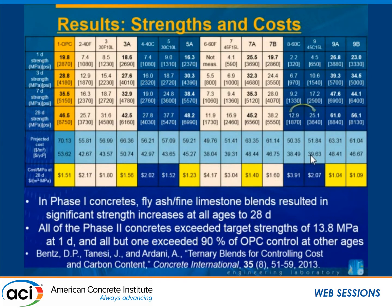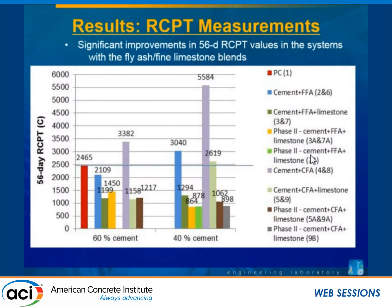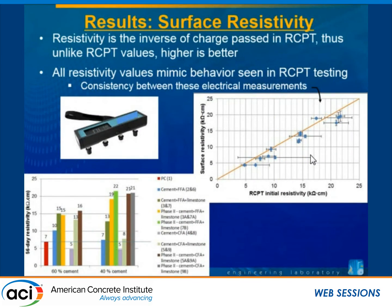The upshot is that with limestone additions, we're mitigating the setting delay associated with fly ash and our strengths are improving. The phase two concretes are nearly on par with OPC concrete, demonstrating equivalence of these fly ash-cement-limestone mixtures with ordinary Portland cement concrete. Rapid chloride permeability results show much lower values than the controls, and surface resistivity values are higher — good durability metrics indicating these concretes would have good durability performance.